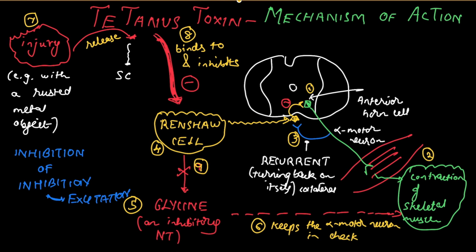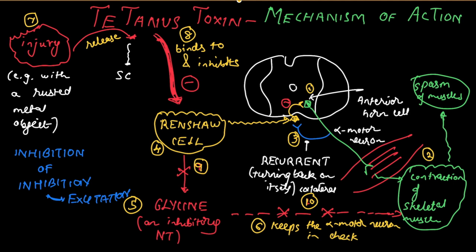This disinhibition causes uncontrolled firing of the alpha motor neuron. The alpha motor neuron is no longer held in check, and uncontrolled firing causes greatly increased tone — which is known as spasm of the muscles. This spasm, particularly of the respiratory skeletal muscles, can lead to death.